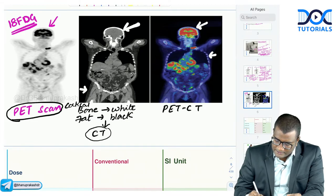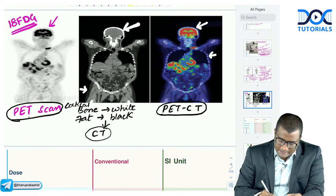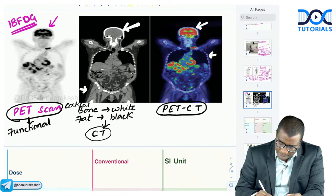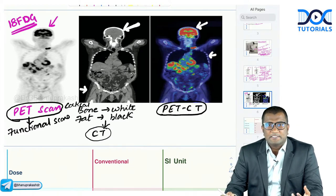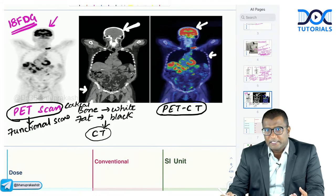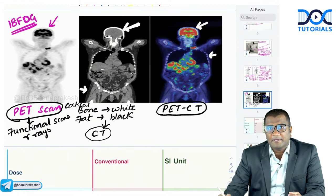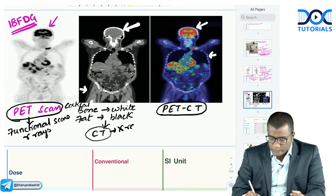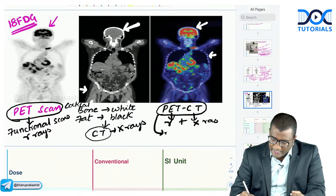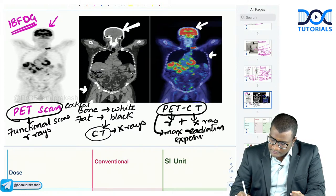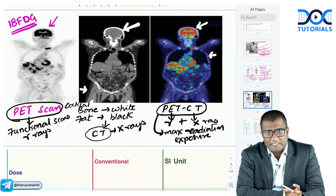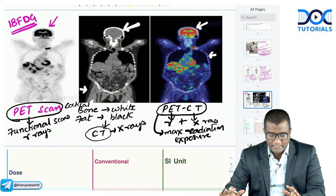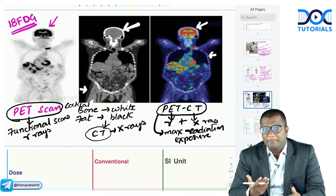Nuclear scans are functional scans — they show hot areas but give no anatomical detail and use gamma rays. CT scans are anatomical studies using X-rays. PET-CT uses both gamma rays and X-rays, making it the modality with maximum radiation exposure among all diagnostic modalities. It is a hybrid imaging providing both functional and anatomical detail. If the cortical bone is black, that would be MRI.